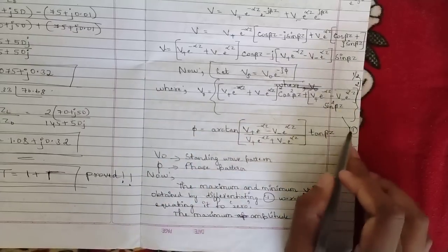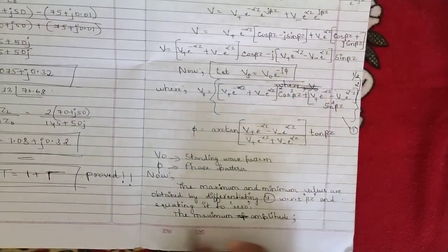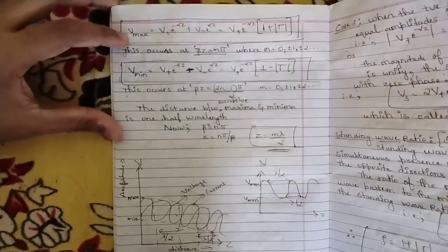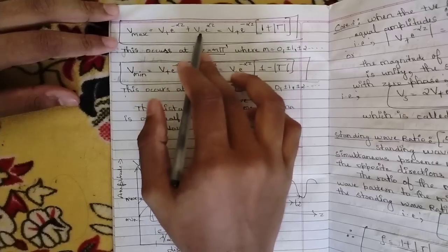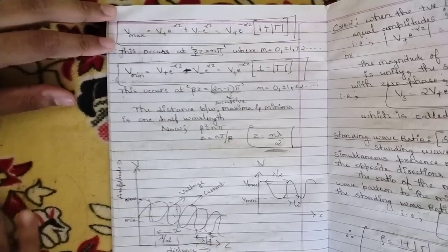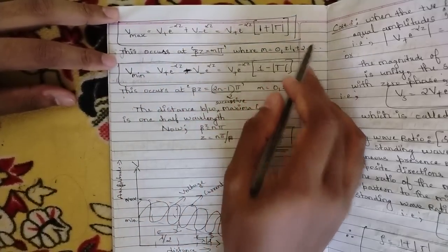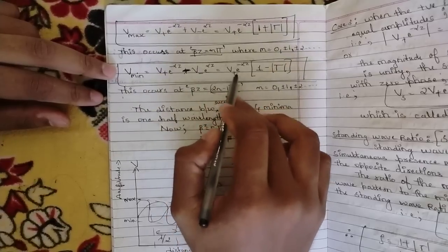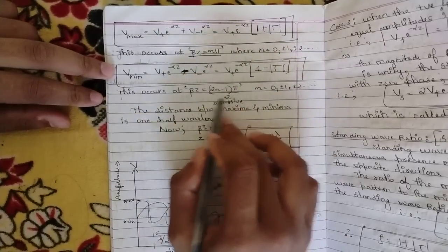The maximum and minimum values are obtained by differentiating equation 1 with respect to beta-z and equating to zero. From this we get V_max and V_min. V_max equals V-plus times e to the power minus alpha-z plus V-minus times e to the power alpha-z, which equals V-plus times e to the power minus alpha-z into (1 plus the magnitude of gamma). This occurs when beta-z equals n-pi, where n equals 0, plus-or-minus 1, plus-or-minus 2. V_min equals V-plus times e to the power minus alpha-z into (1 minus gamma), and this occurs when beta-z equals (2n minus 1) times pi divided by 2.